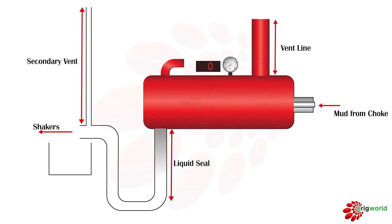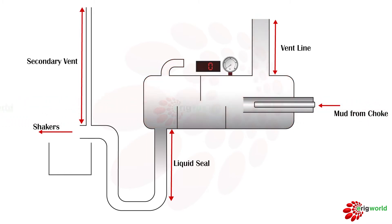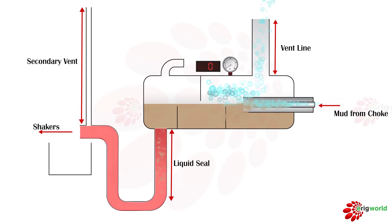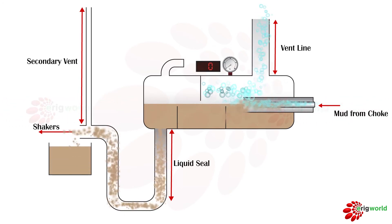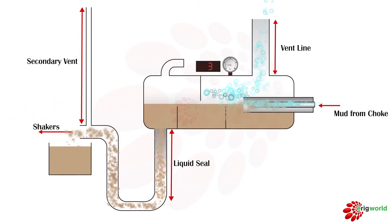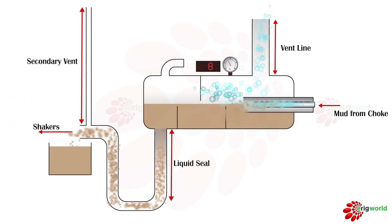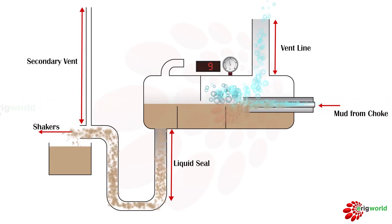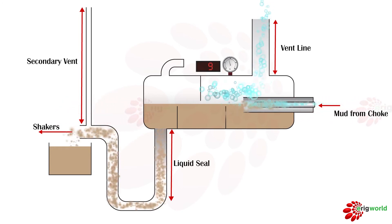This type of MGS or gas separator is also used in well testing. Oil, gas, and other fluids come into the system. The liquid, being heavier, settles down, while the gas, being lighter and free, breaks out of solution and passes through the vent line. The liquid passes through the liquid seal or deep tube and goes to the shaker. The pressure build-up inside the vessel can be read from the pressure gauge — currently reading 9 psi, meaning the build-up pressure in the vessel is 9 psi.